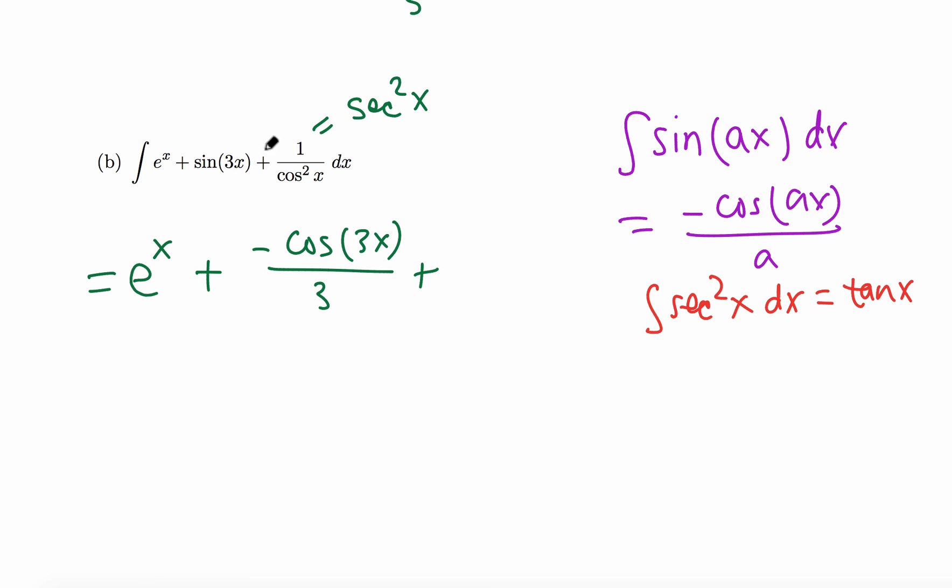So in this case, plus the antiderivative of secant squared is tangent x, and plus c always there. That's it. Maybe plus minus minus, that's just one extra step. Negative one-third cosine 3x plus tangent x plus c. Final.